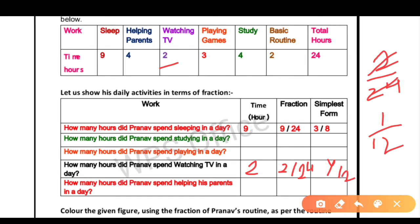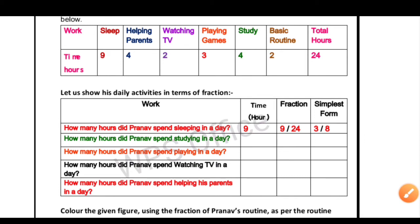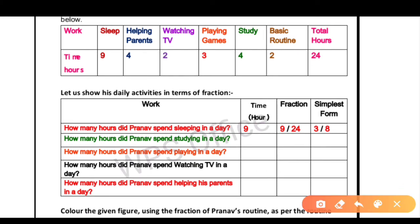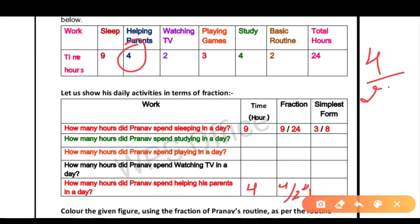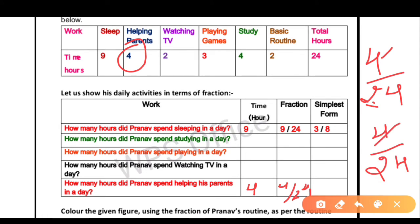How many hours did Pranav spend helping his parents? He helps his parents for 4 hours. So the fraction is 4 by 24. When we simplify 4/24 by dividing both by 4, it becomes 1 by 6.